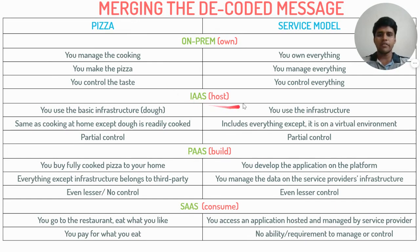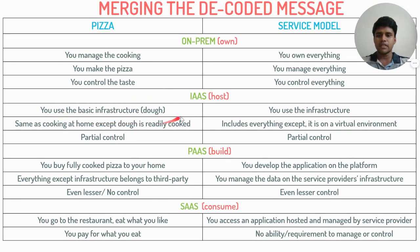With Infrastructure as a Service, we host — it includes all activities of on-premise except it is on a virtual environment. We use the infrastructure of the service provider via internet, thereby having reduced control but savings in cost. The corresponding pizza model is using the infrastructure or basic ingredient — the dough — from a third party, resulting in a partial reduction in control.